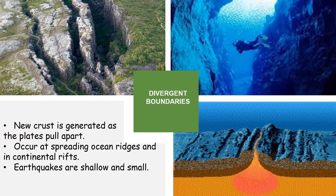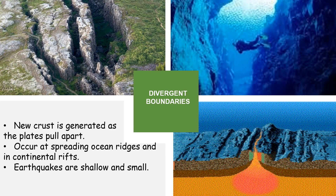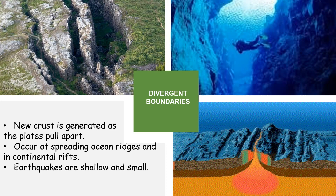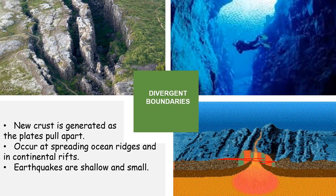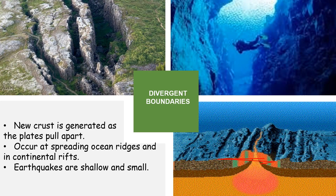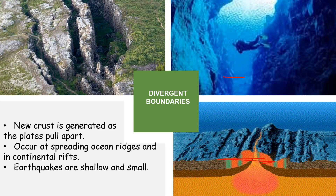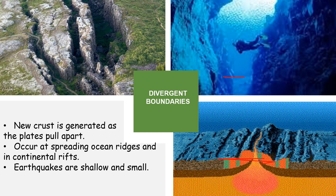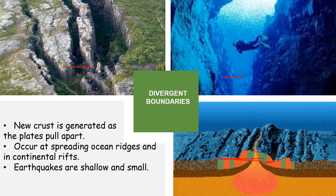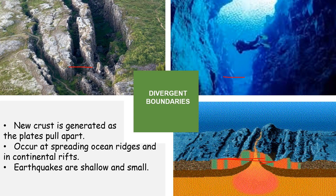In Divergent Boundaries, the main geologic processes are that new crust is being generated as the plates are pulled apart. This occurs at spreading ocean ridges and in continental rifts. The earthquakes produced at Divergent Boundaries are shallow and small.